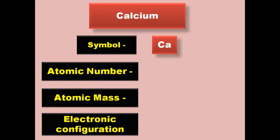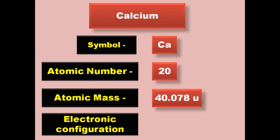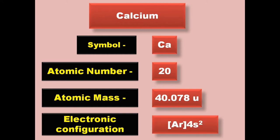Calcium has symbol Ca, atomic number 20, atomic mass 40.078, electronic configuration [Ar] 4s2. Calcium is an alkaline metal and exists in solid form at room temperature.